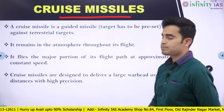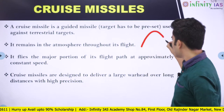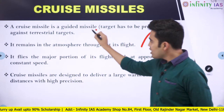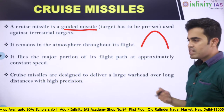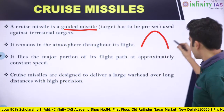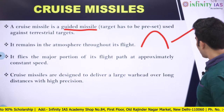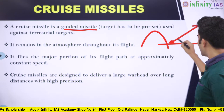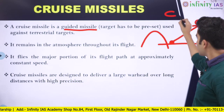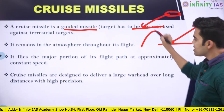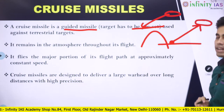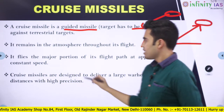Next comes cruise missiles. A cruise missile doesn't follow a ballistic trajectory — it is a guided missile. We see surface-to-surface missile or surface-to-air missile configurations. A cruise missile can be launched from the surface of the earth towards an aircraft, or from an aircraft towards the earth. This is the key difference between the trajectory of a cruise missile and a ballistic missile.